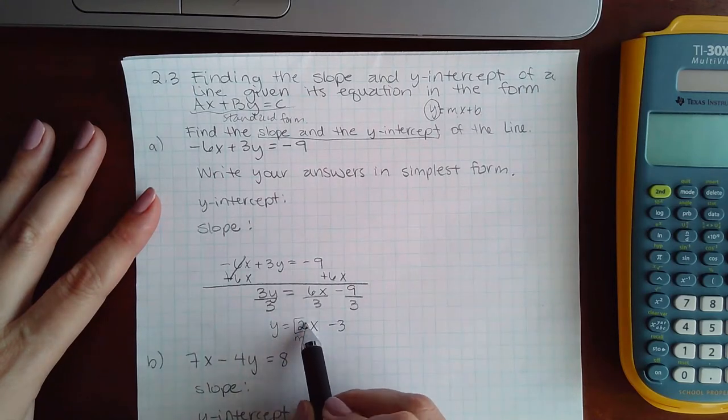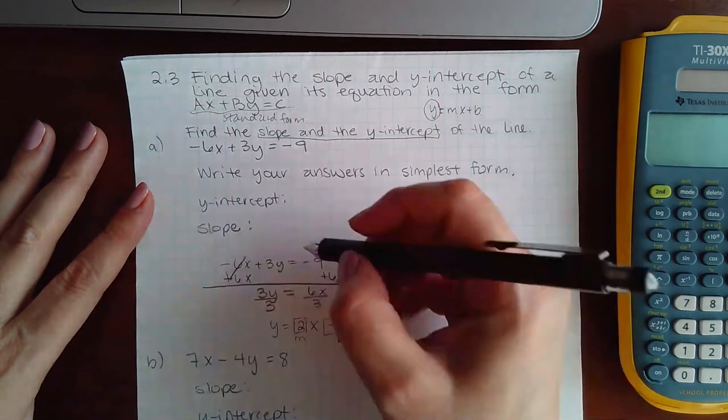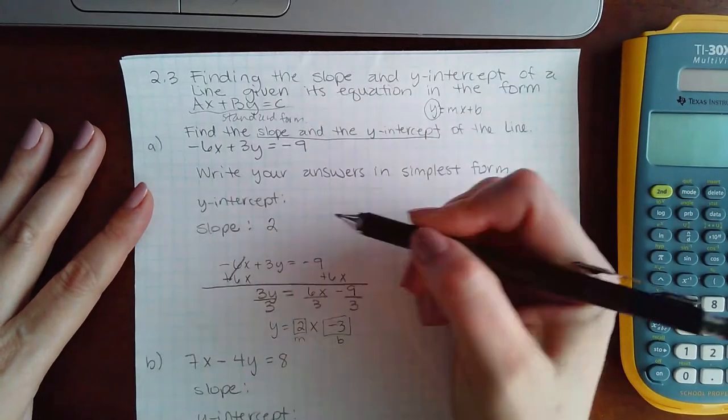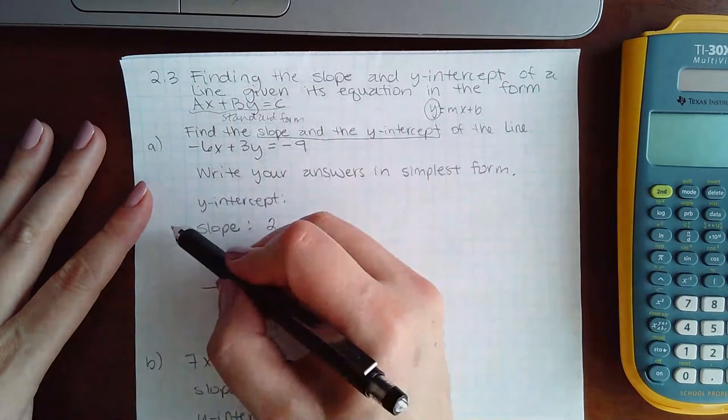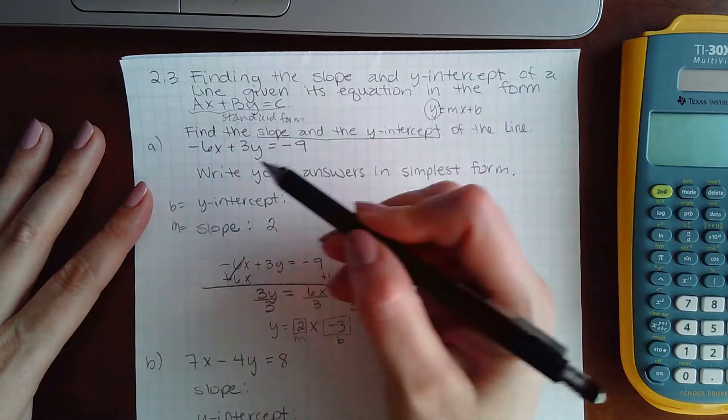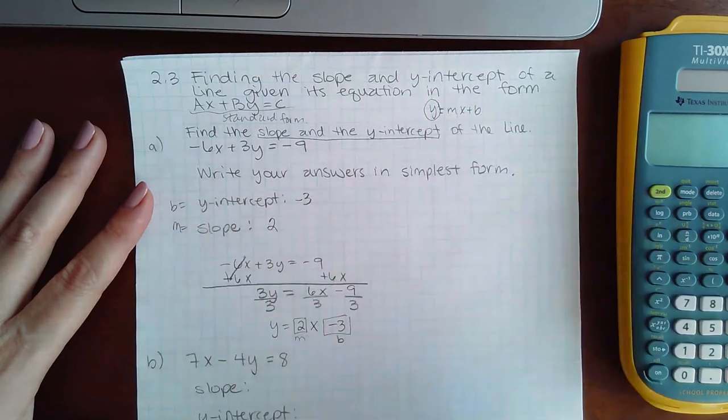So now I know what my M is and I know what my B is. My M is the slope, so my slope is 2. This is M. And B is the y-intercept, which is negative 3.